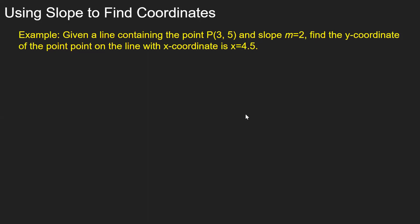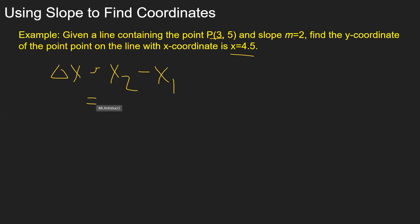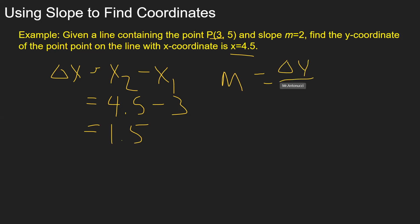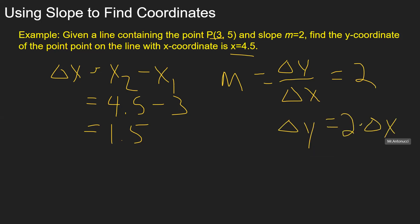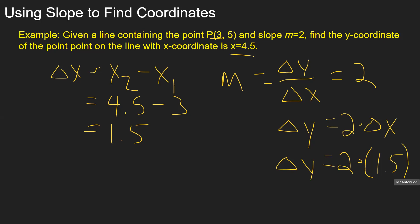You can use slope to find coordinates. For example, if you're given a line containing the point (3, 5) with slope 2, you want to find the y-coordinate of the point on the line with x-coordinate x = 4.5. We know two x values, so we can get the increment of x: x2 minus x1, which is 4.5 minus 3, giving us 1.5. We also know that slope equals increment of y over increment of x, which equals 2. So the increment of y equals the constant times the change in x — 2 times 1.5 equals 3.